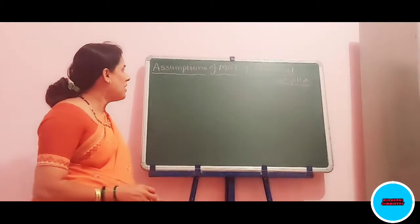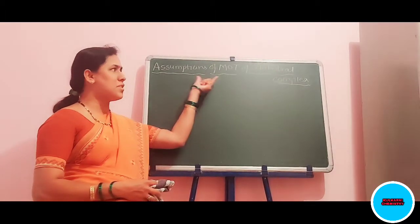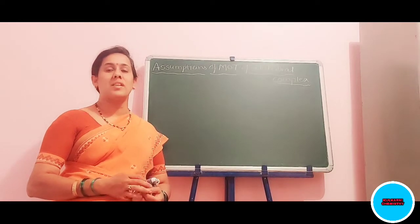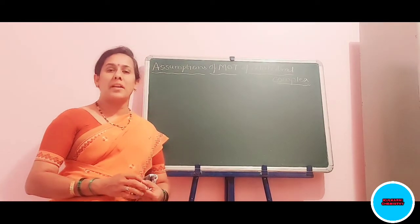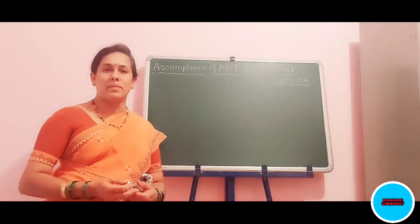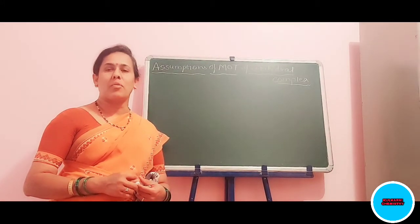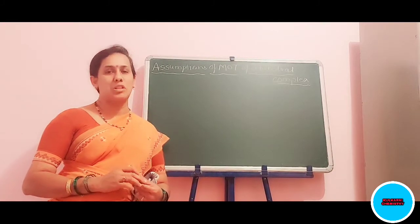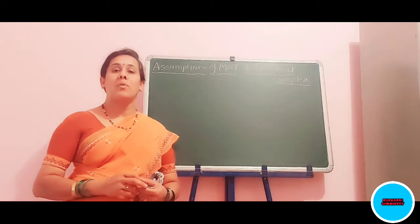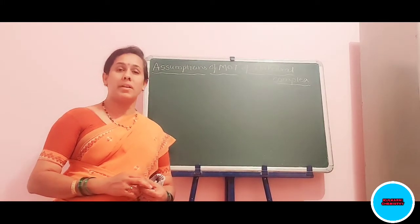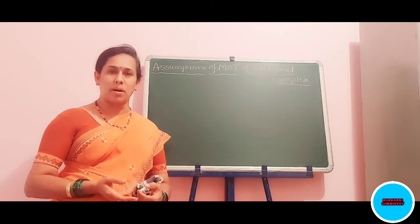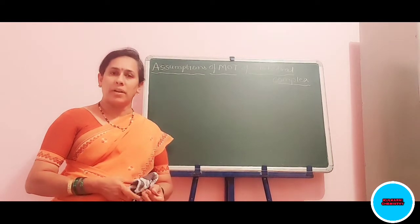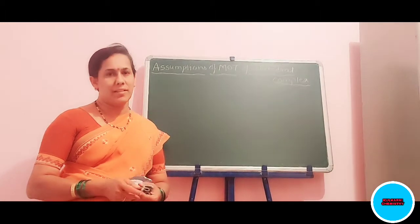Hello everyone. Today we are going to discuss the assumptions of molecular orbital theory. In the last lecture, we discussed the basics related to MOT — what the diagrams are, which orbitals are called A1G, T1U, and T2G. In today's lecture, we are going to discuss how many orbitals can take part in sigma bonding orbitals and how many orbitals can take part in pi bonding orbitals. We will see the assumptions one by one.